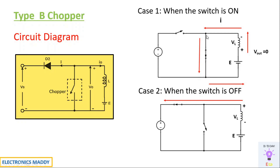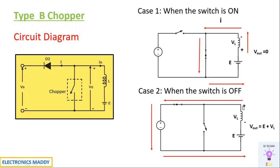Plus is directly appearing at the anode terminal of the diode, so diode D2 is forward biased and is represented as a short circuit. Current flows through this path and comes back in this direction. Therefore, Vout will be equal to E plus VL — that is, the supply voltage E plus the energy stored across the inductor.